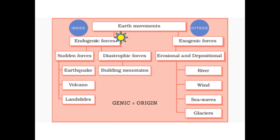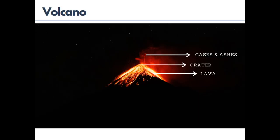Now let's see about endogenic forces in detail. First comes volcano. A volcano is an opening in Earth's crust through which lava, ash, and gases escape. Lava is the molten magma that comes to Earth's surface. Volcanic eruptions occur due to endogenic force, that is the forces that come from Earth's interior.